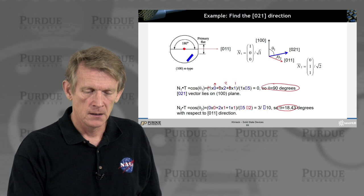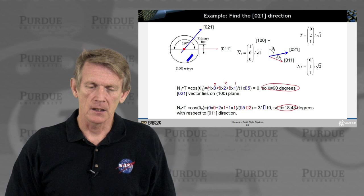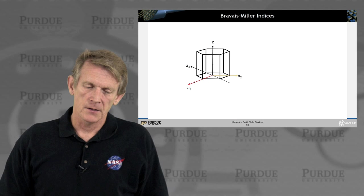And there we have now the 0, 2, 1 vector.